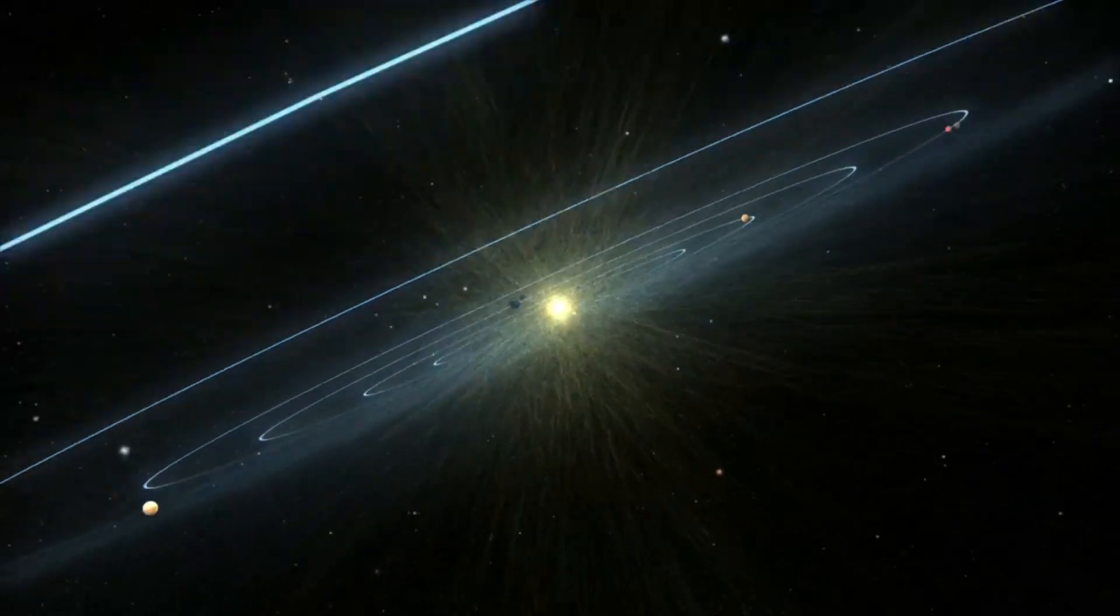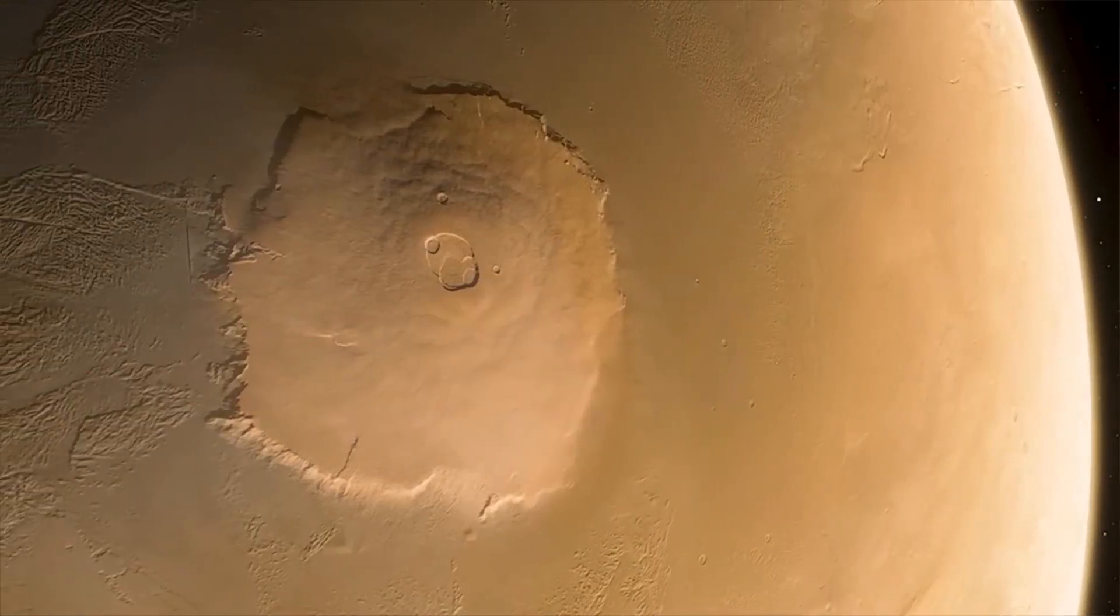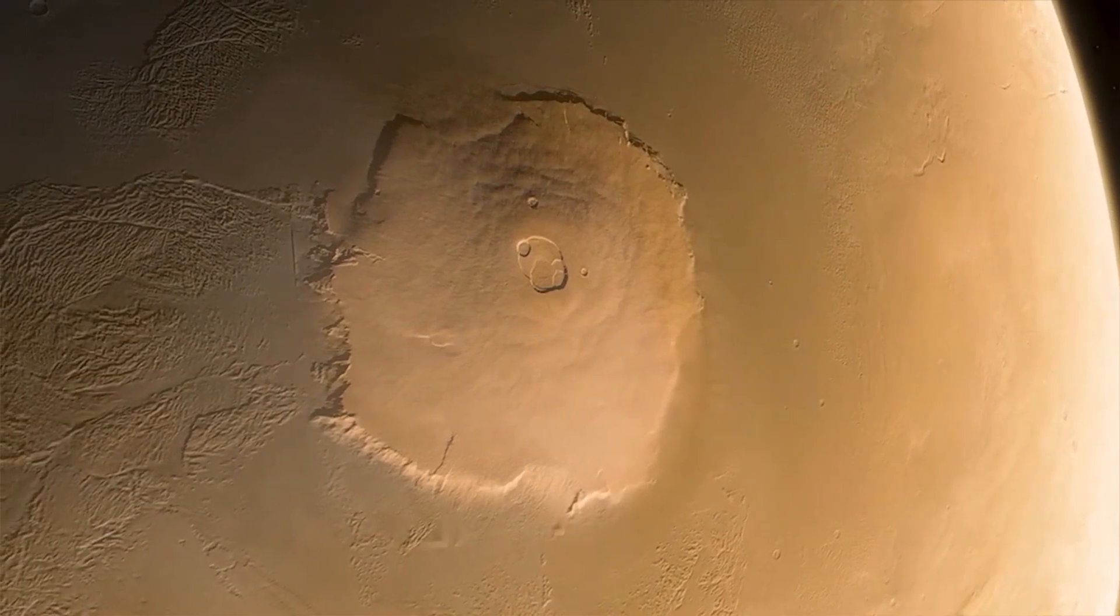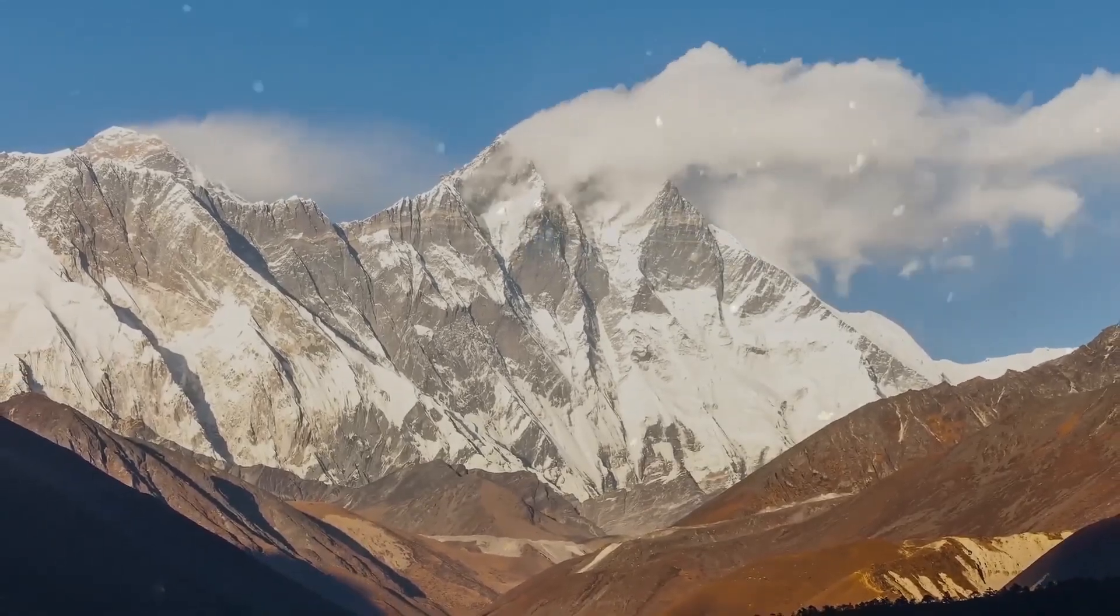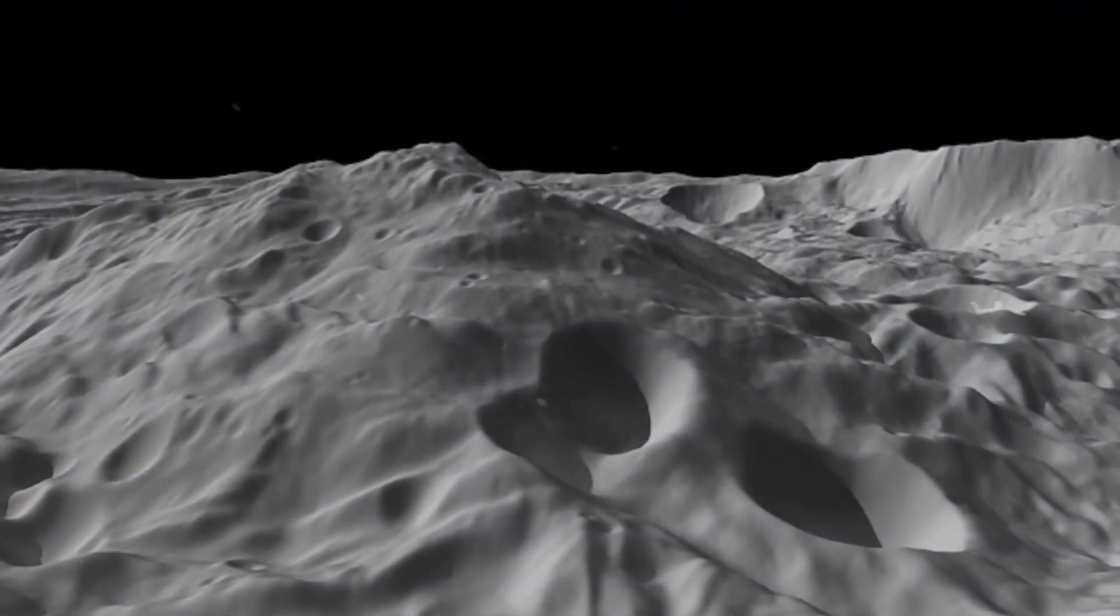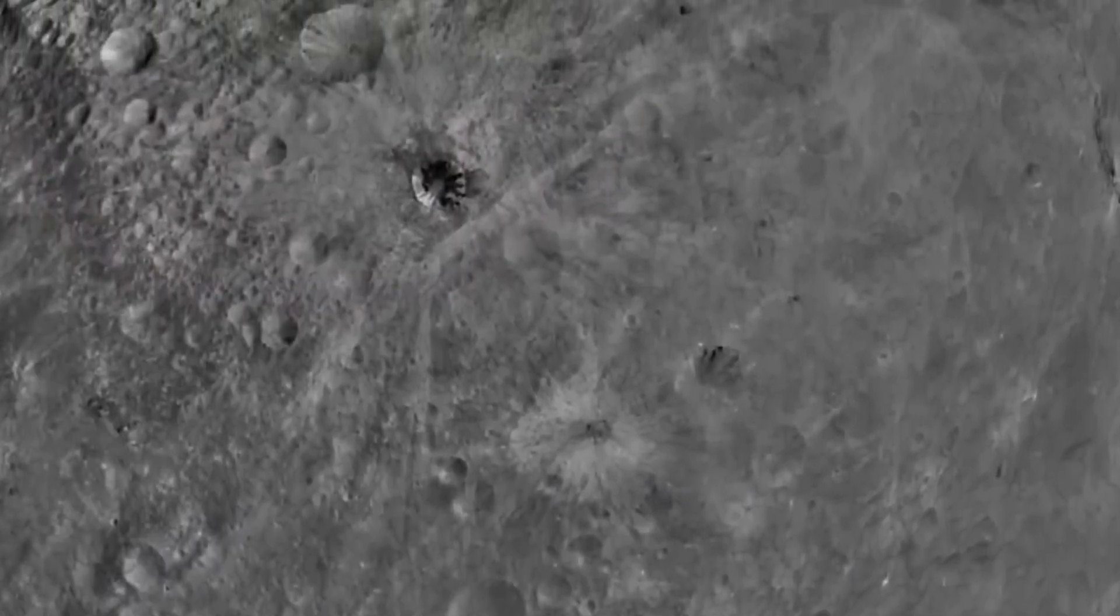The largest volcano in our solar system is on Mars. Olympus Mons stands about 13.6 miles or 22 kilometers high, nearly three times taller than Mount Everest. But the highest mountain discovered in the solar system is not on any planet, but on an asteroid called Vesta.